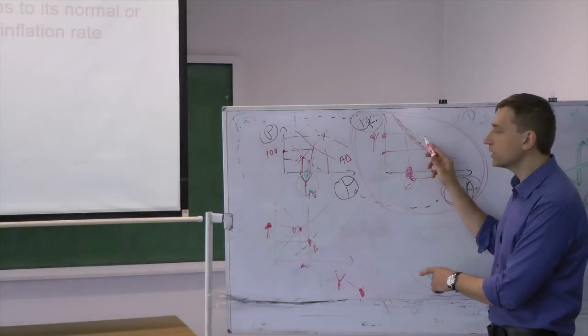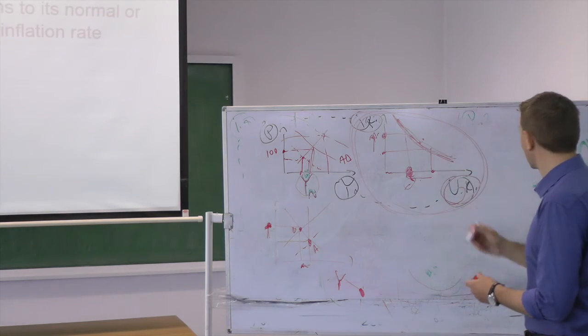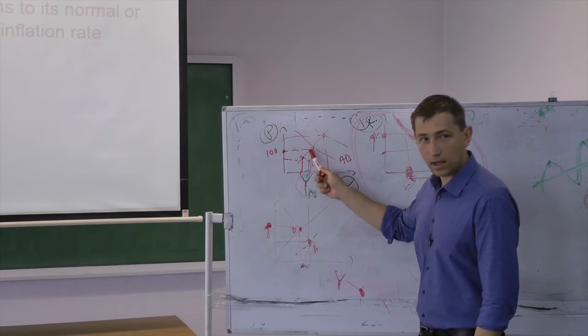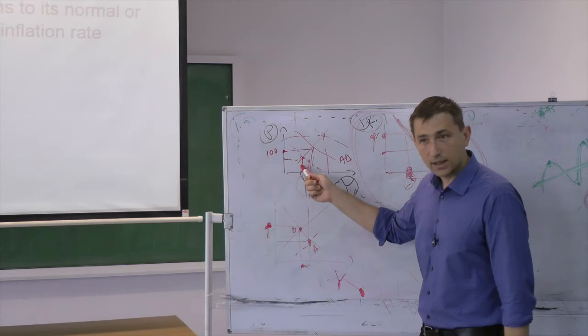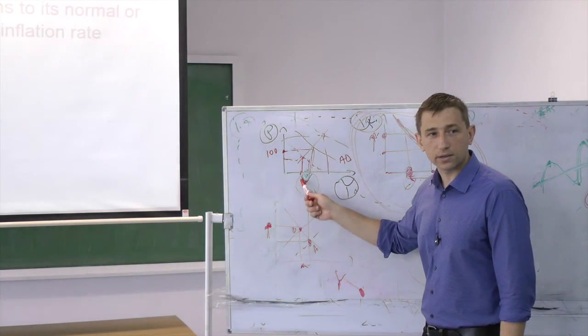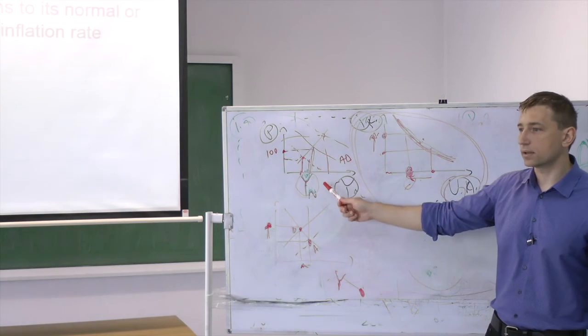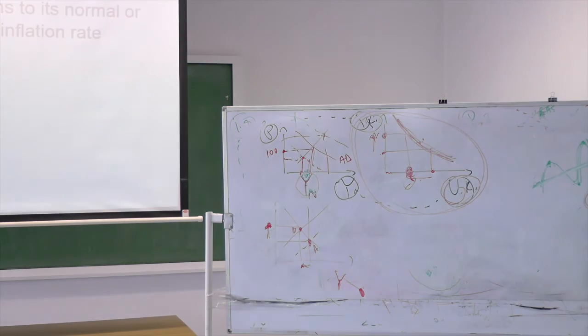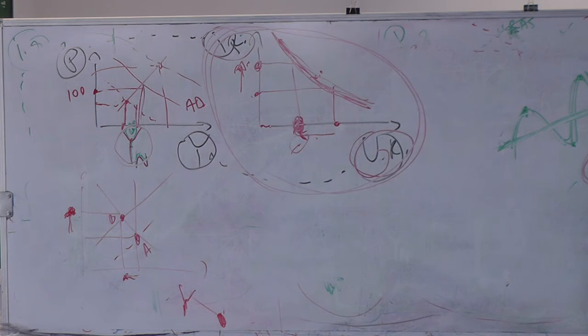This is true in the short run. In the long run, it will not work. Why? Because everything we did here, our explanation was based on this graph. But this graph missed the long run aggregate supply. You see, there is no long run aggregate supply here. And the long run aggregate supply will make a big change in the full story.